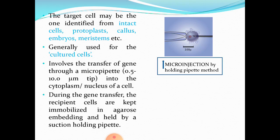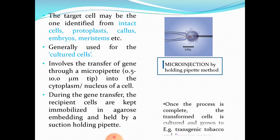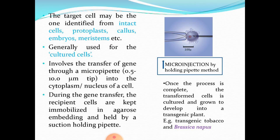During the gene transfer, the recipient cells are kept immobilized in agarose embedding, as you can see in the diagram. The cell is held on the left-hand side by a suction holding pipet. With the micropipet, you insert the DNA of your choice directly into the cytoplasm or nucleus. Once the process is complete, the transformed cell is cultured and grown to develop into a transgenic plant.